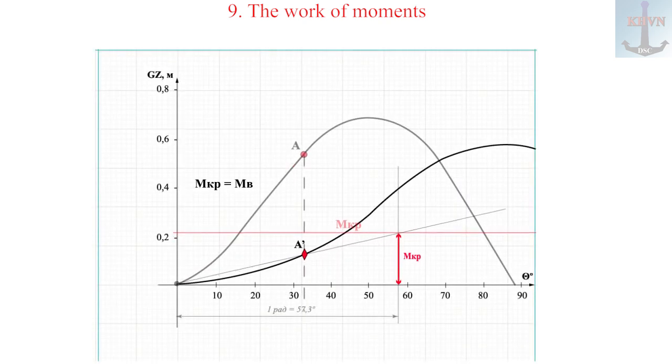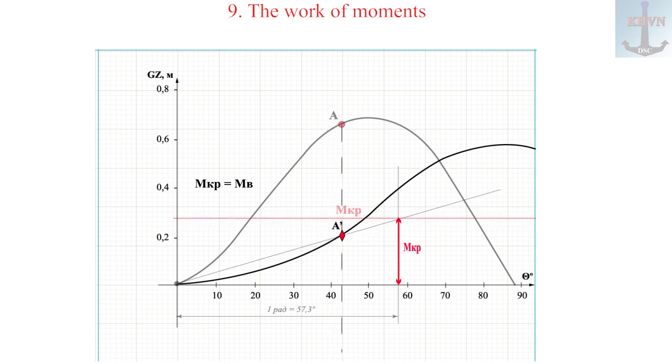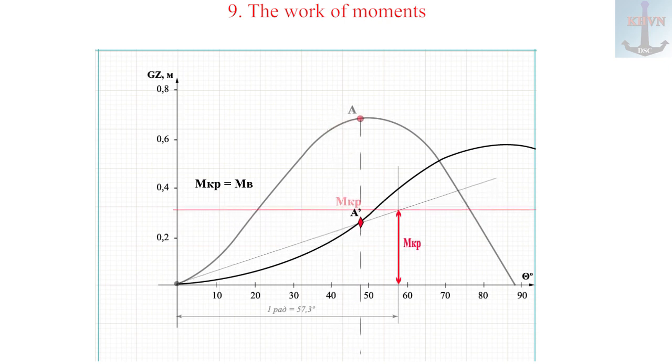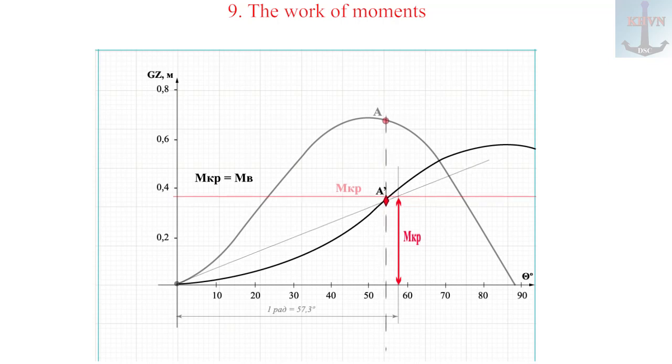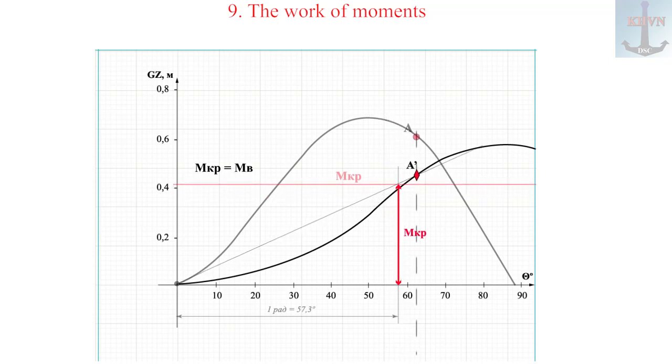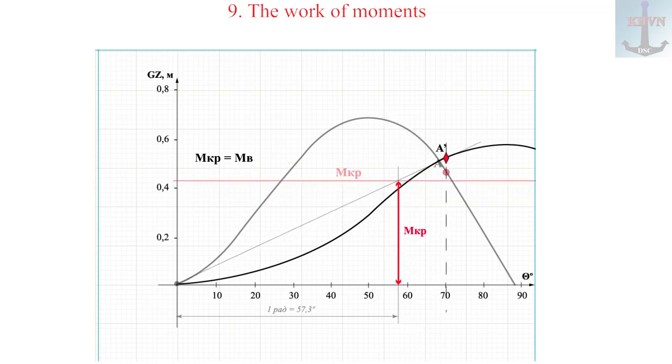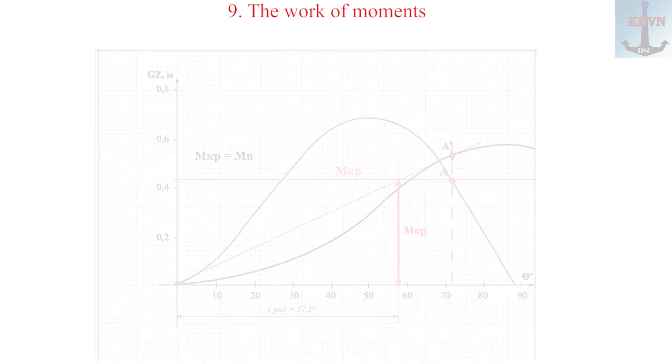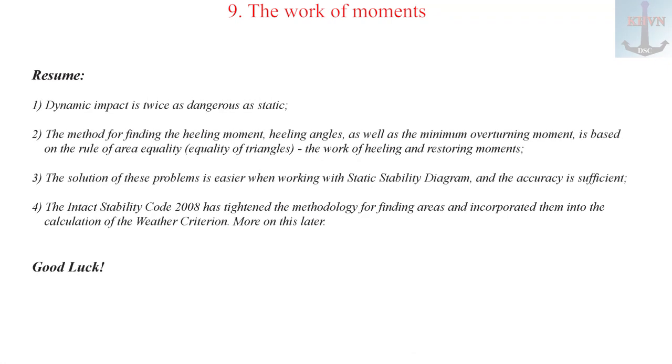Resume. One: dynamic impact is twice as dangerous as static. Two: the method for finding the healing moment, healing angles, as well as the minimum overturning moment, is based on the rule of area equality, equality of triangles, the work of healing and restoring moments. Three: the solution of these problems is easier when working with static stability diagram.